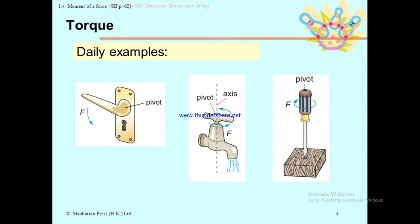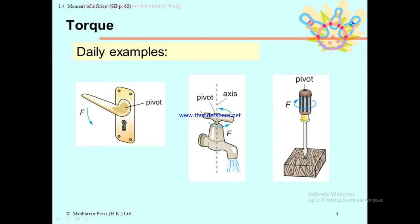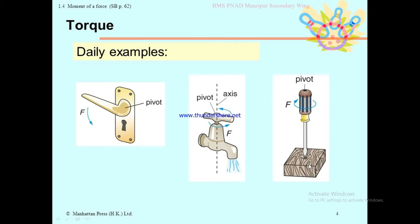A daily life example of torque: when you turn a screw on or off, you apply a rotational force. You have to rotate your force — this is torque in action. By turning a screw, you produce clockwise or anticlockwise force, and the body rotates. The body can change direction — clockwise and anticlockwise.